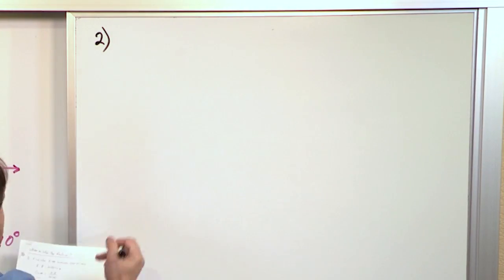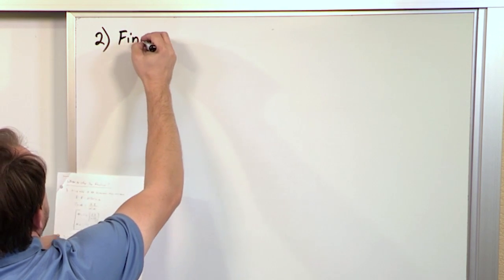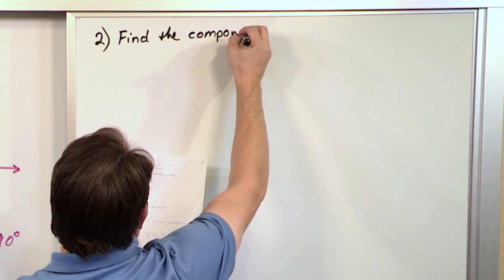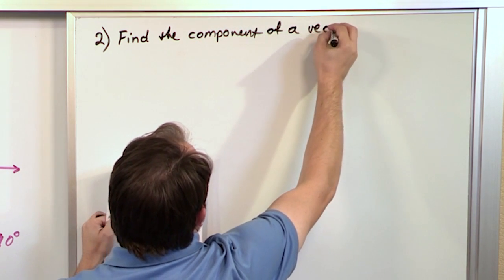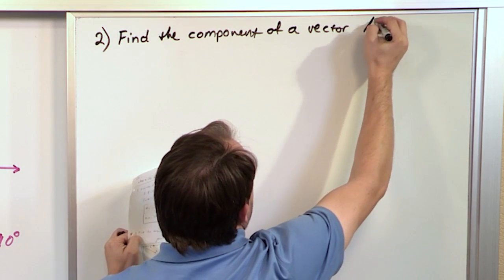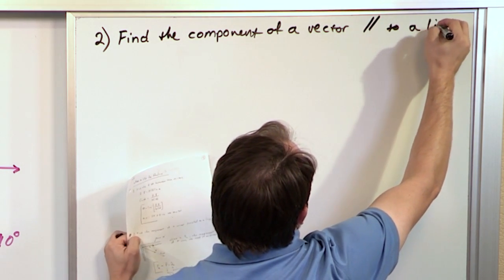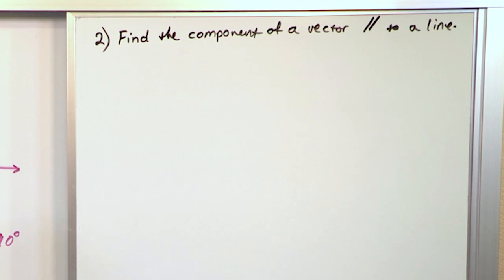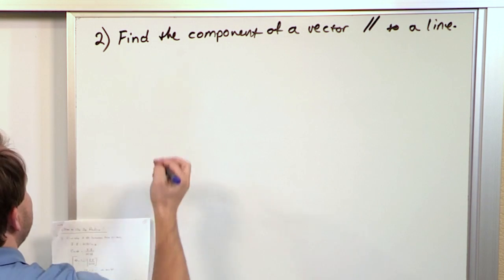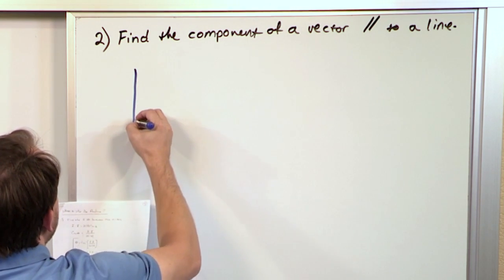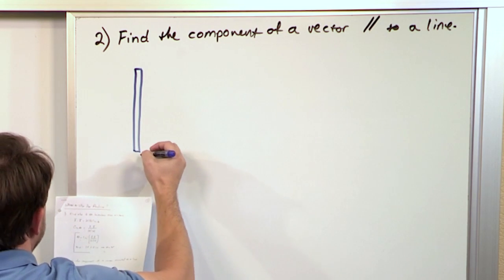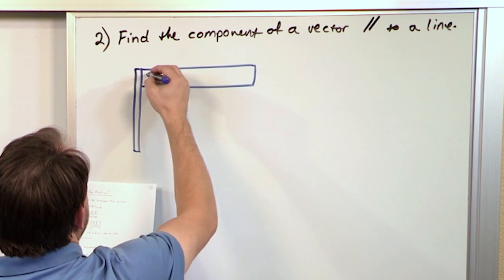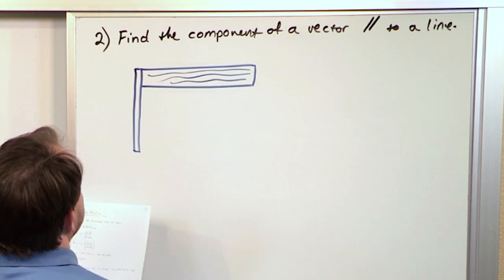Another case, more appropriate for mechanics, is finding the component of a vector parallel to a line — some arbitrary line you've defined. This is much more easily explained with a picture. What if you have two pieces of wood — one beam here and another beam here — two pieces of wood joined together.